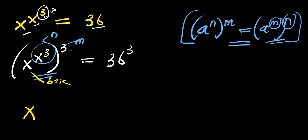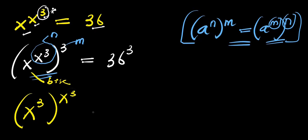The m is now inside, which is 3, raised to the power of the n which is now outside, which is x power 3. And this equals 36 to the power of 3.